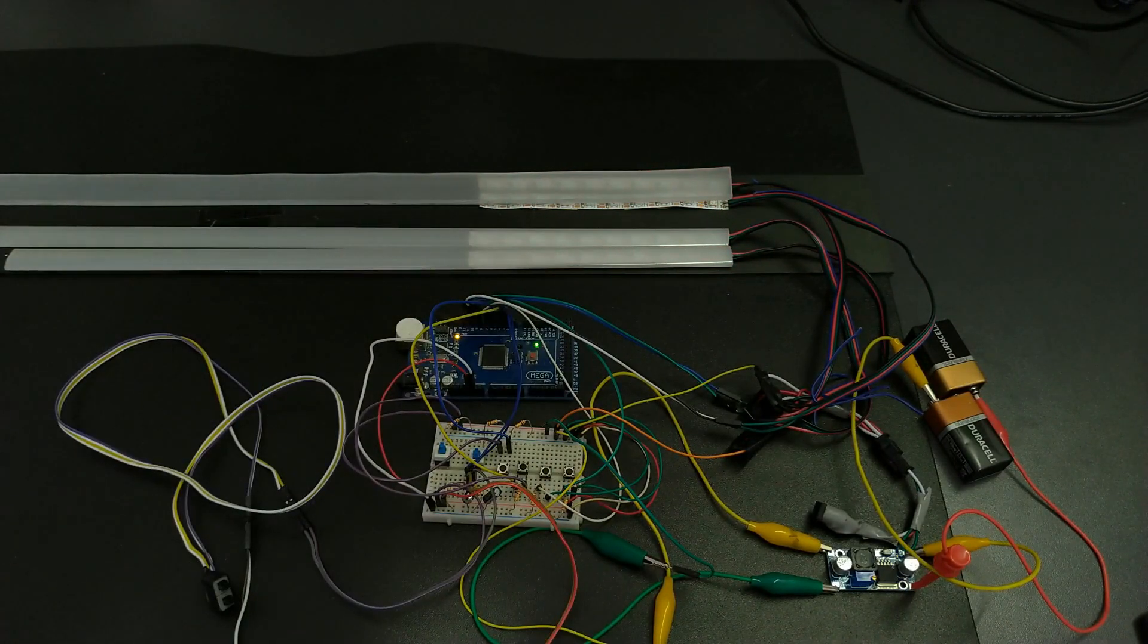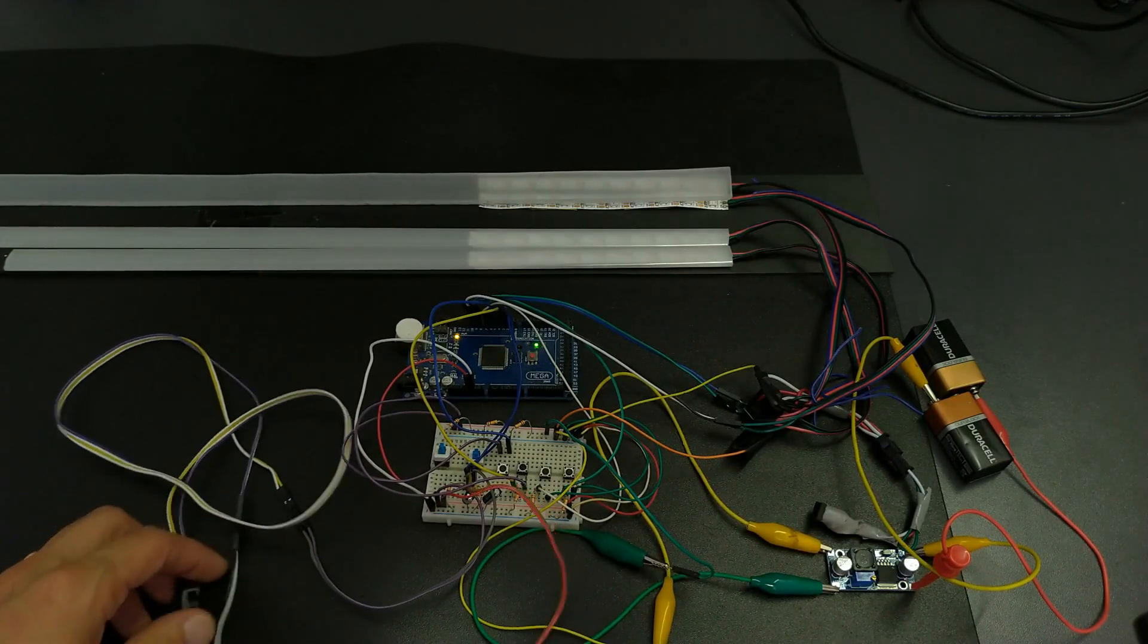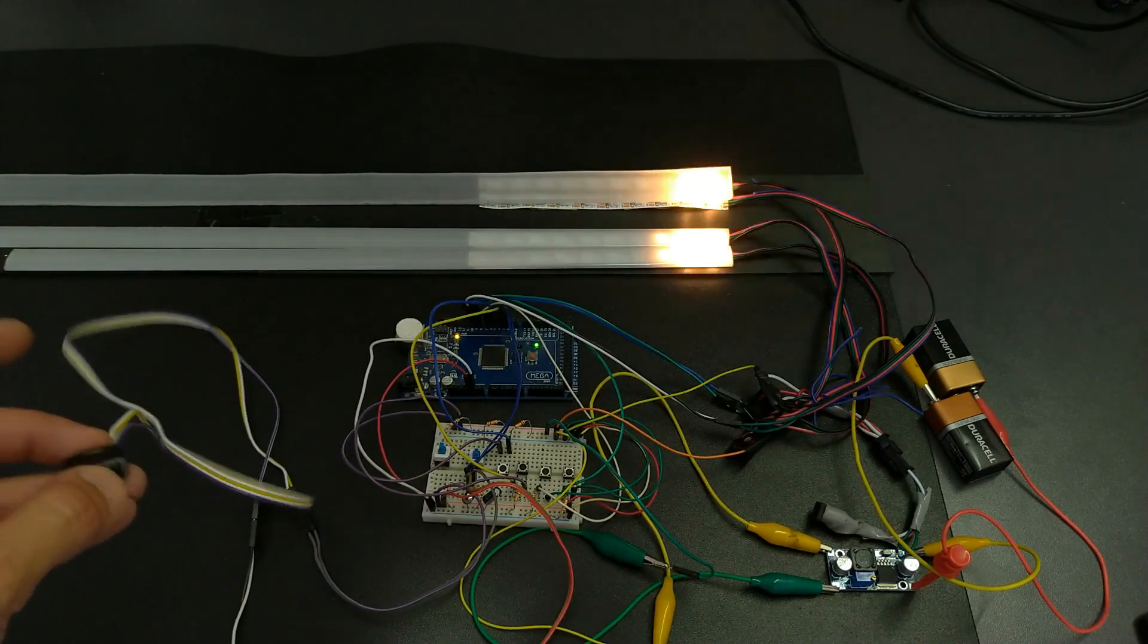For turn signals the controller remains the same but in the code you have a custom variable that you can change. And this defines how many turn signals it will make with one push of a button.